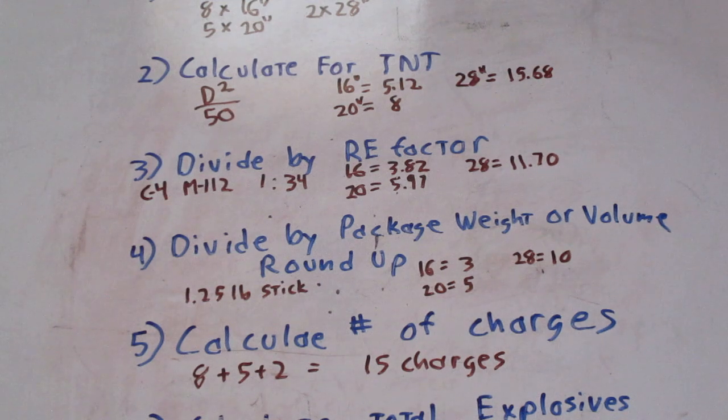Now, we need to calculate the number of charges. We had 8 trees at 16 inch diameter, 5 trees at 20 inch, 2 trees at 28 inch, so we need 15 total charges.